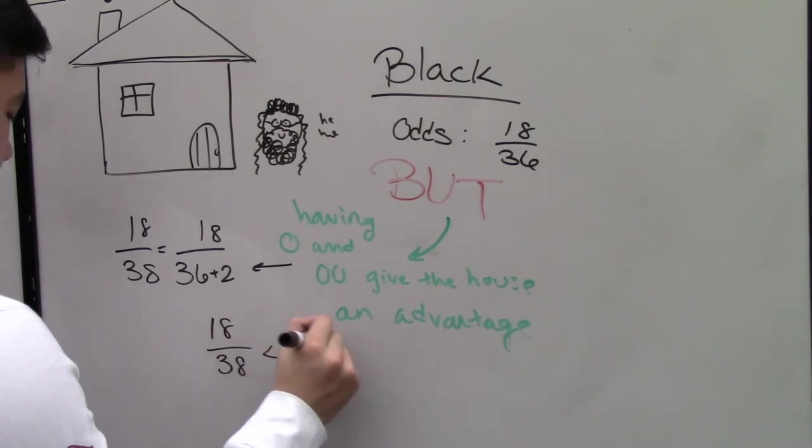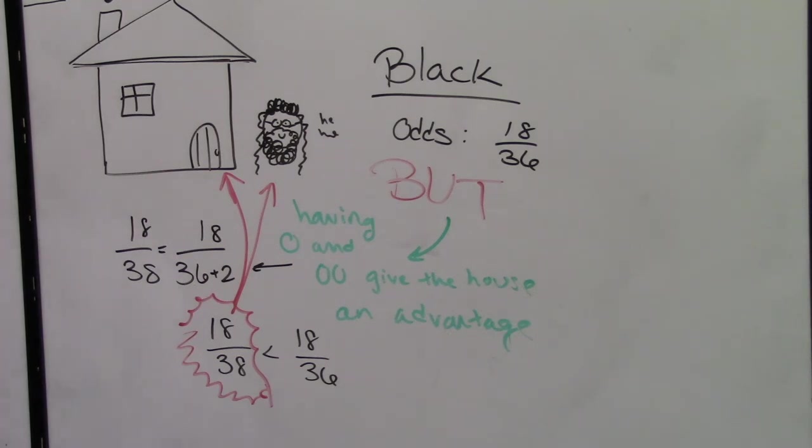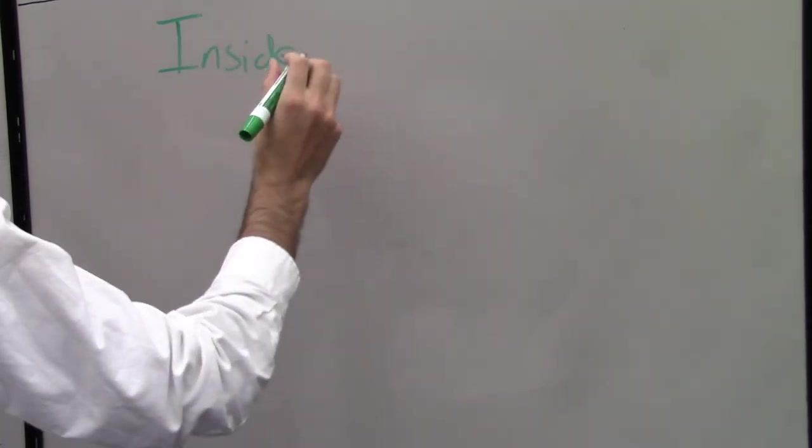The house has an approximate 5.3% advantage. We will look at a few examples to show the expected payoff on different types of bets.